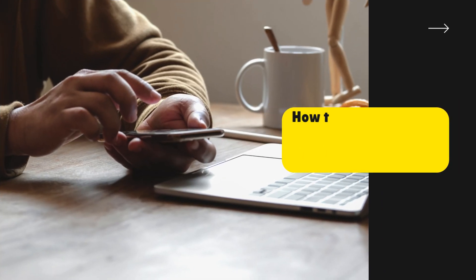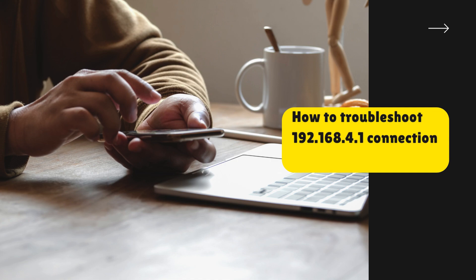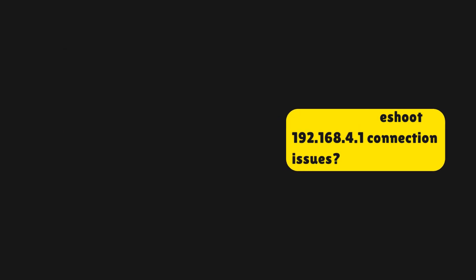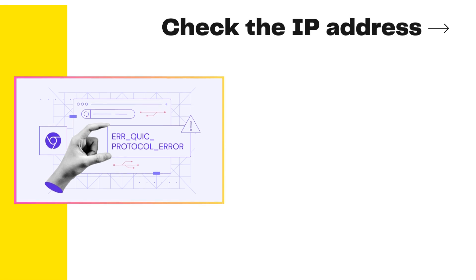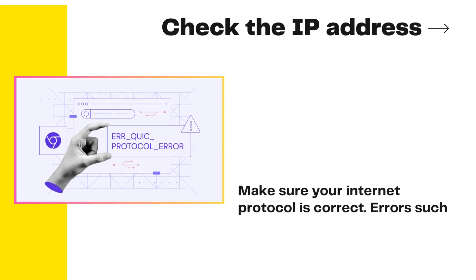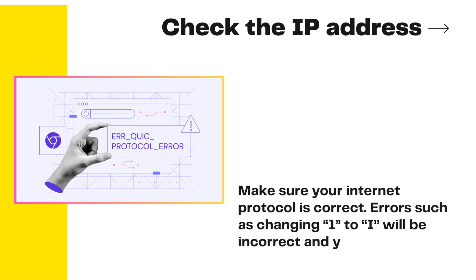How to troubleshoot 192.168.4.1 connection issues. Check the IP address — make sure your internet protocol address is correct. Errors such as changing the number 1 to the letter I will be incorrect and you will not be able to access it.